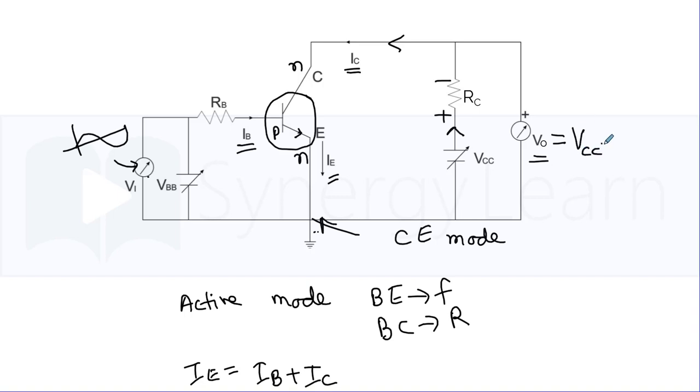So the output will be VCC minus IC×RC. The RC is the output resistance which is kept high, and in the active mode in which the circuit is being used now, the collector current is also high.